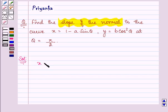Here we have x is equal to 1 minus a sine theta and y as b cos square theta.